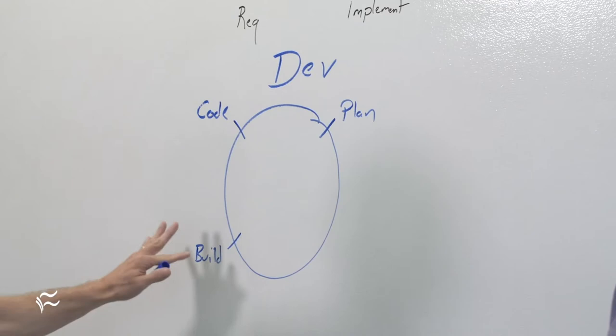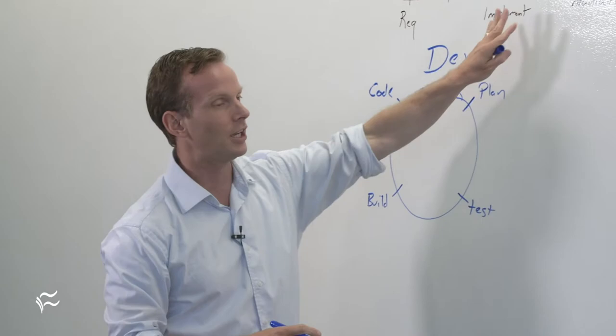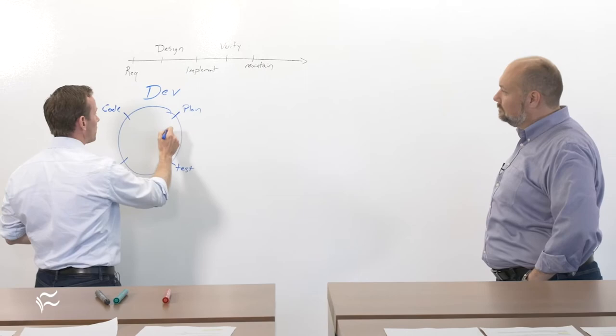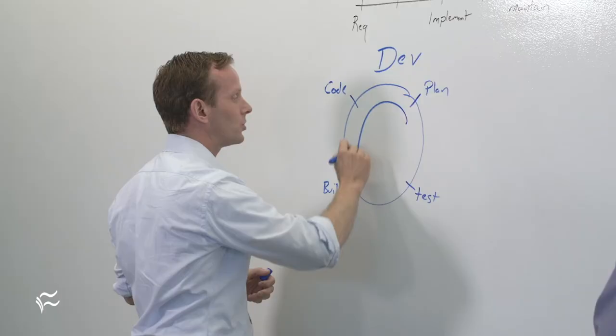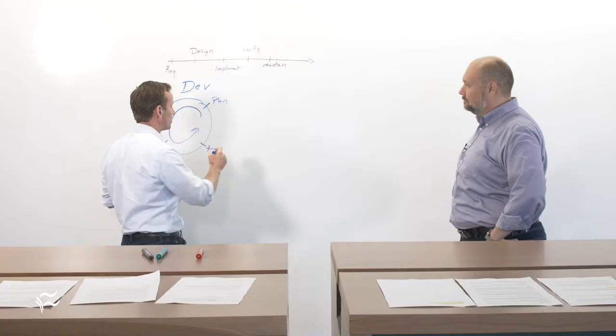And this was a realization that verification isn't just verifying the requirements. It's testing to see how well it works. And so, when we think about development, we're trying to make it a fast-moving cycle where you can revisit the planning phase. You can go back through code, build, test, and then, of course, we're going to have various software releases. So, we're going to release it.